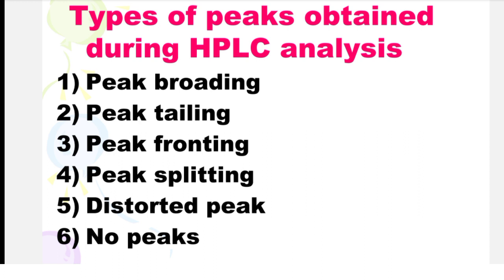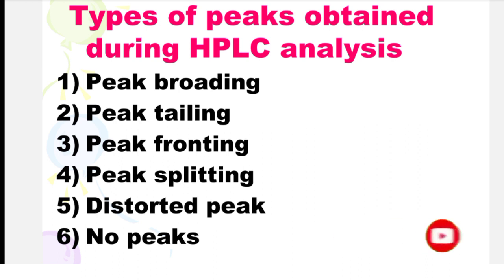Friends, if you are regularly working on HPLC, then you have observed such types of peak shape issues: peak broadening, peak tailing, peak fronting, peak splitting, distorted peak, and no peaks. Let's discuss one by one.